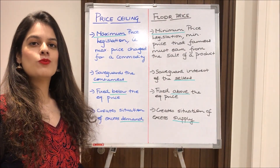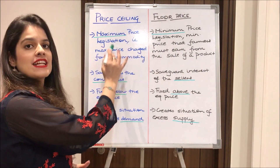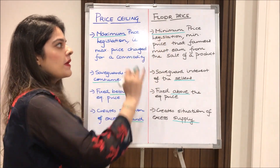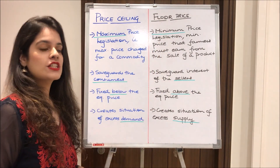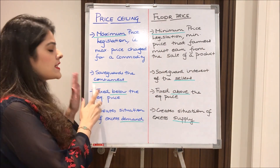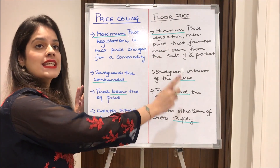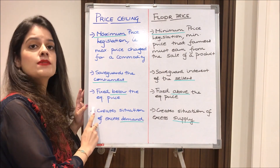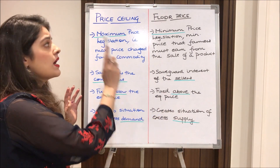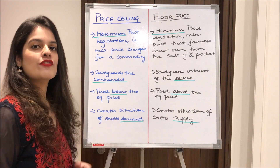Now I'll talk about price ceiling and floor price. Price ceiling is the maximum price legislation — the maximum price charged for a commodity — whereas floor price is the minimum price legislation — the minimum price that farmers must get for selling their product. Price ceiling is done to safeguard the interest of consumers, whereas floor price safeguards the interest of sellers. Price ceiling is fixed below the equilibrium price, whereas floor price is fixed above the equilibrium price. Price ceiling creates a situation of excess demand, whereas floor price creates a situation of excess supply.